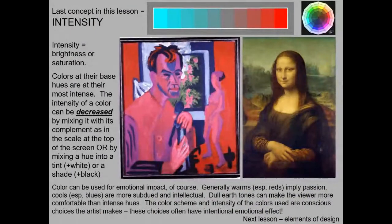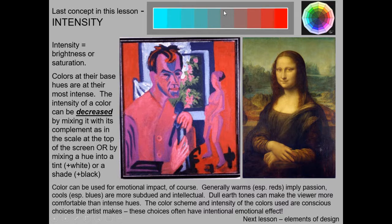The last color concept is intensity. Those two portraits have very different emotional feels — the Mona Lisa feels much less intense than the German Expressionist painting beside it. Intensity refers to how saturated a color is — how much pigment, how vivid the color appears. We can desaturate colors in two ways: either by adding white or black to make tints and shades, or by mixing complements together. If I take orange and blue-green — those complements — the more I mix them together, the more I get neutral grays, and of course the color becomes much less intense.